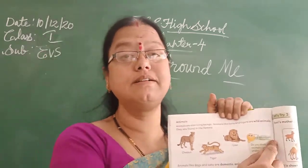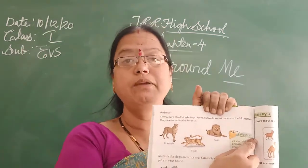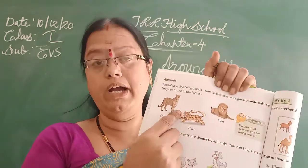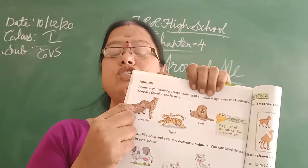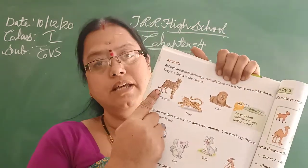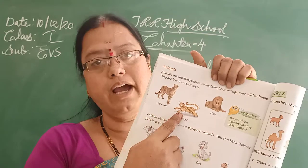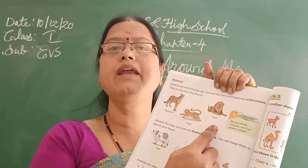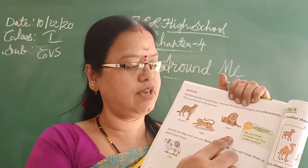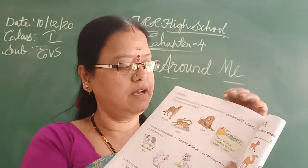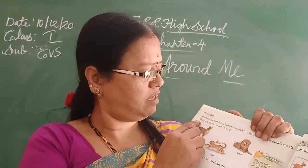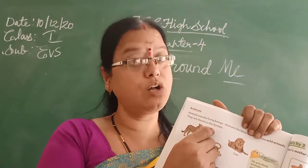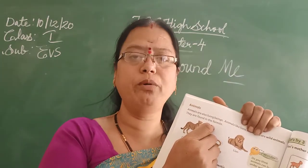Animals like lions and tigers are wild animals. Do you know wild animals? See in the picture — lion, tiger, cheetah. These are all wild animals. They are found in the forest and also in the zoo.